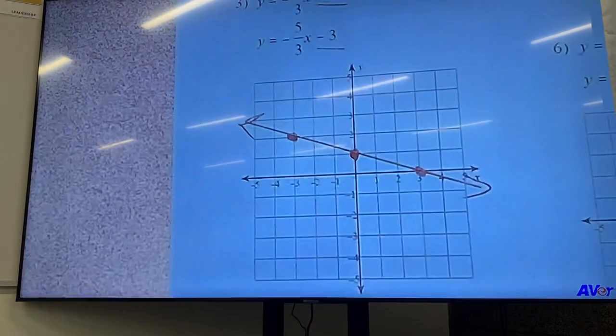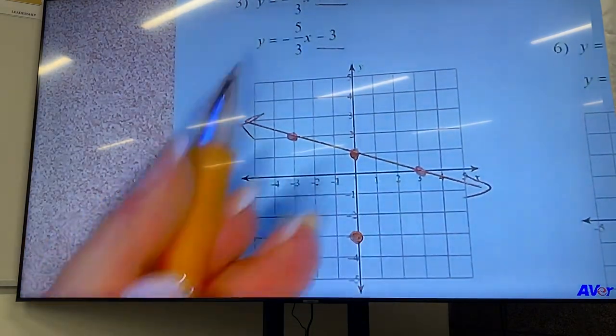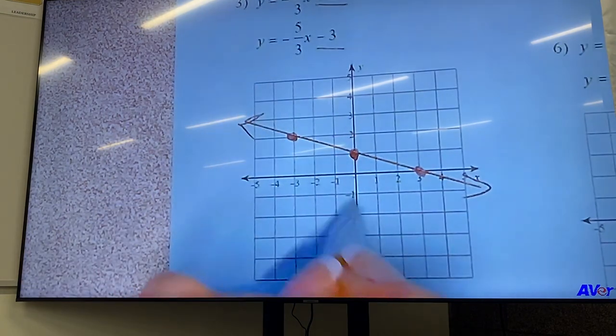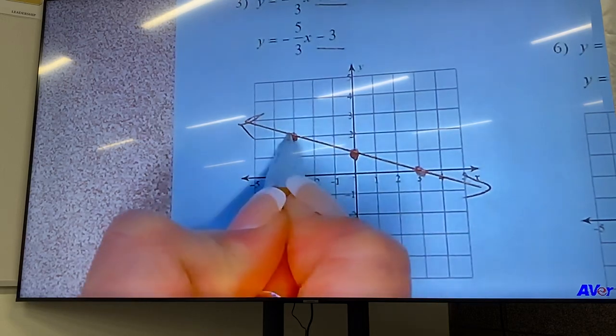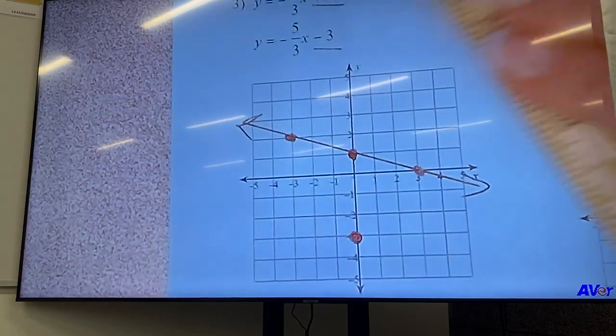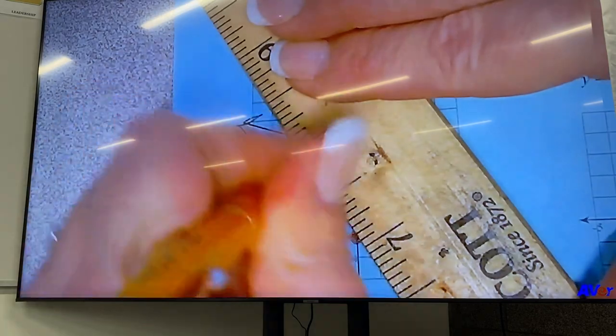Next line. Y intercept is negative three. Put a dot right there. And then our slope is negative five over three. So we go up five, one, two, three, four, five, over one, two, three. And it's that same dot that we've actually already made. So my other line looks like this.